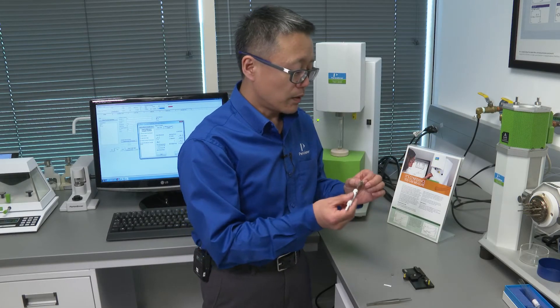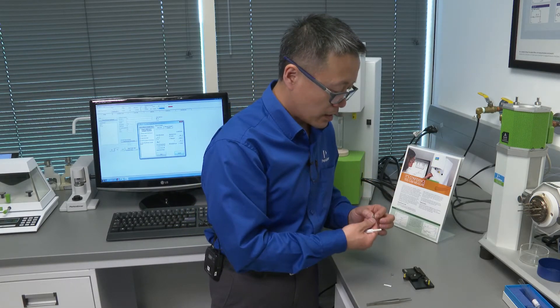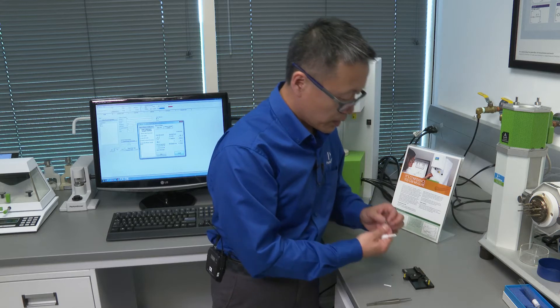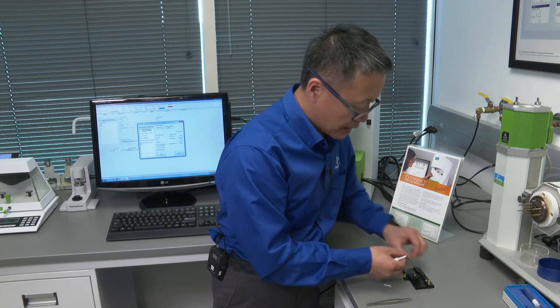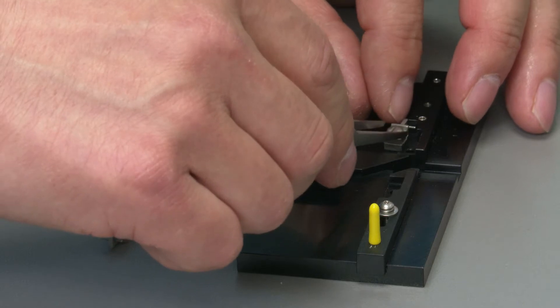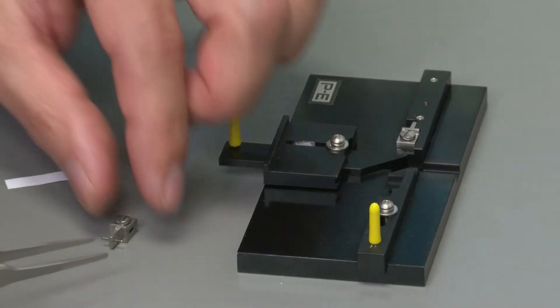First you want to unscrew these and loosen them up so it has an opening for the sample, and you want to put these two parts into this fixture.